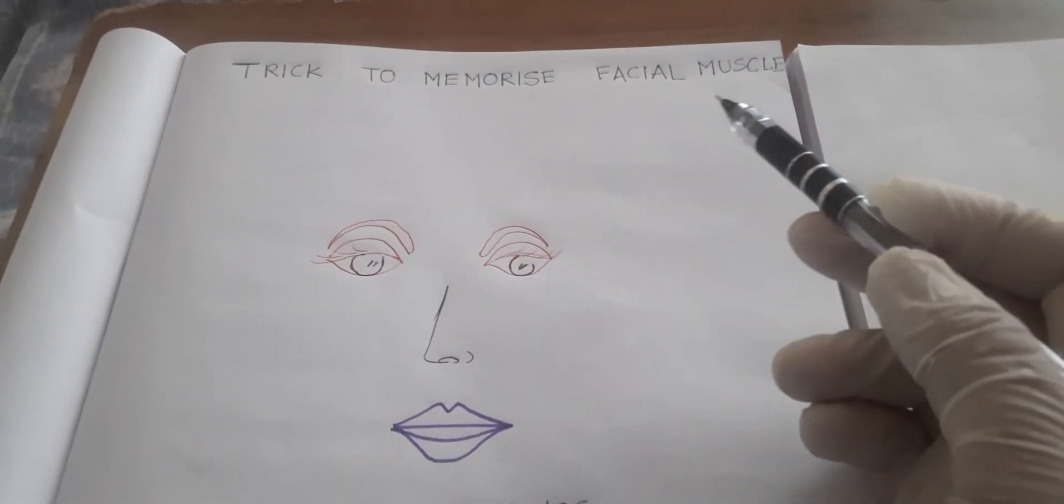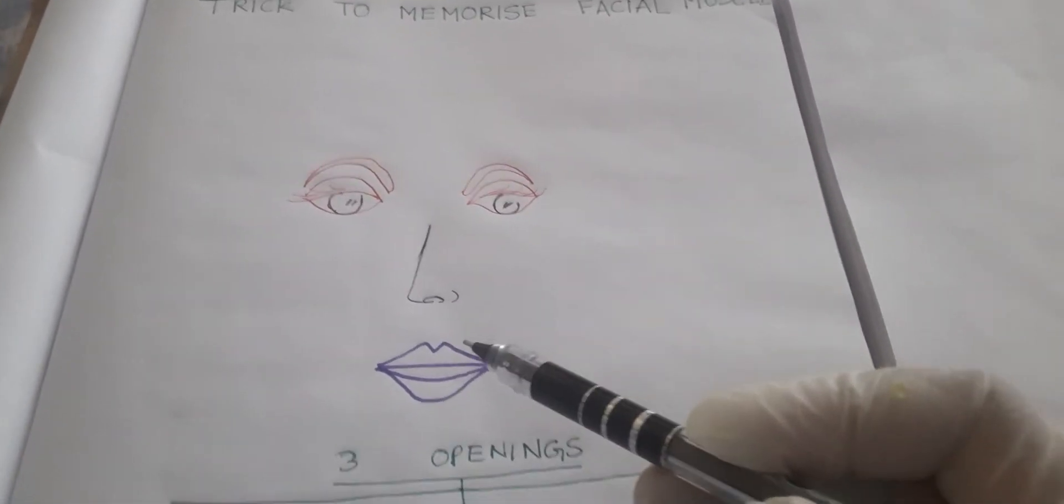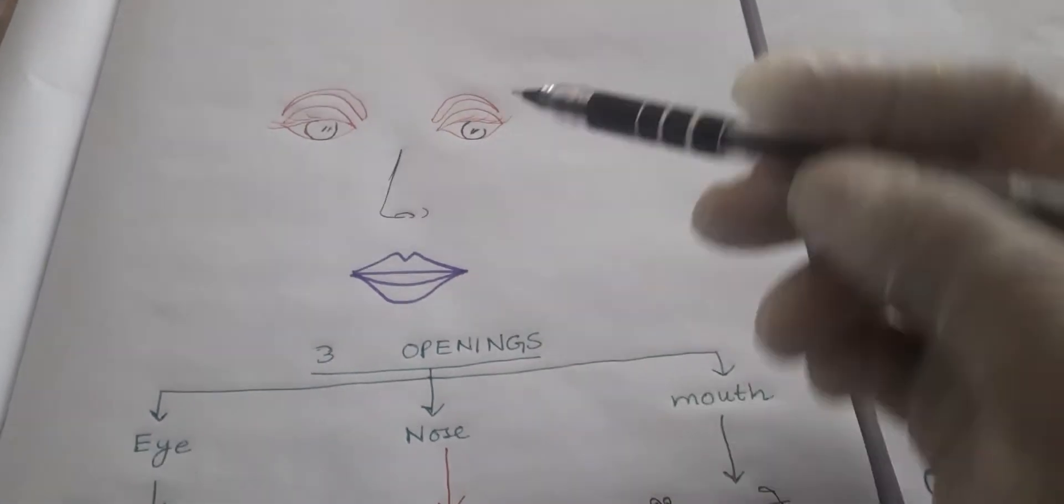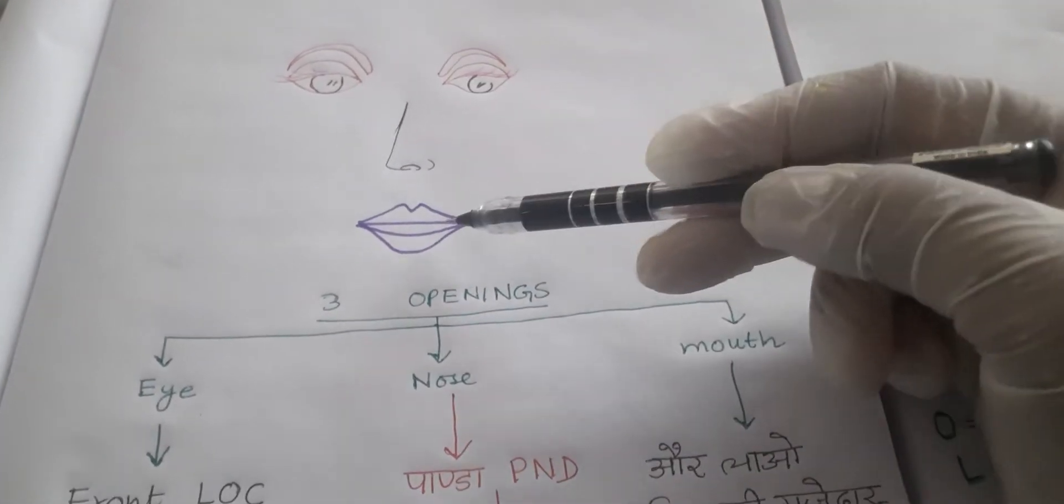Today I am going to tell you a trick to memorize facial muscles. On the face we have got three openings: one of eye, one of nose, and one for the mouth.